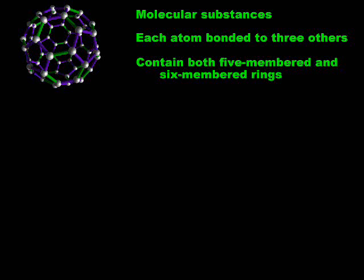Fullerenes are molecular substances in which carbon atoms are arranged to form spherical molecules. As in graphite, each carbon atom is bonded to three others. The fullerenes contain five-membered as well as six-membered rings, and the five-membered rings are responsible for the curvature.